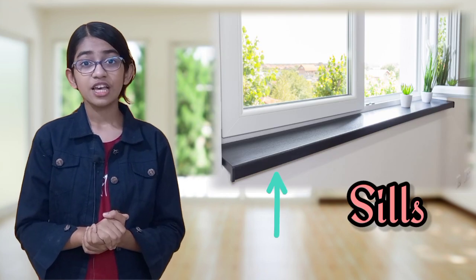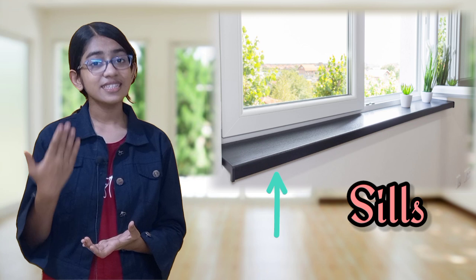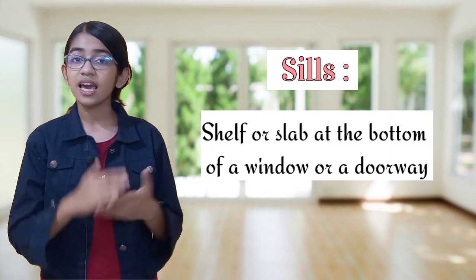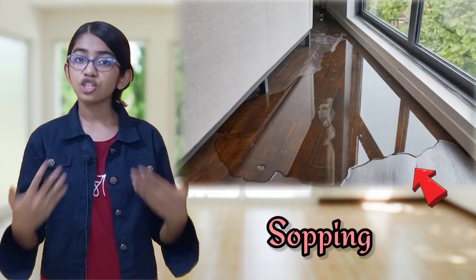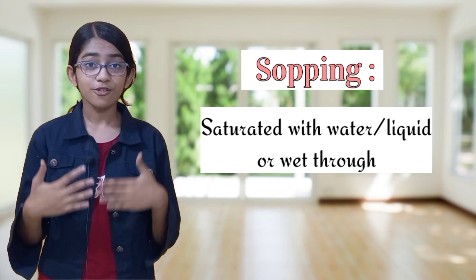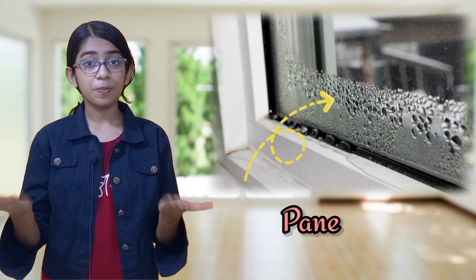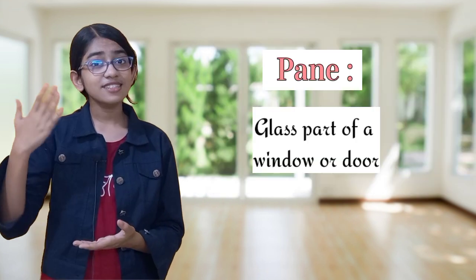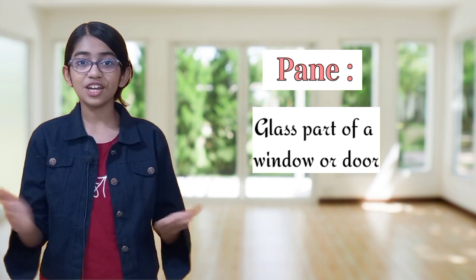In the very next moments, you saw the sopping sills. So, your second word is sills. It means the shelf beneath something inside or outside. Now, your third word is sopping. It means saturated with water or liquid, or wet through. After some time, you noticed moisture on the window pane. So, your fourth word is pane. It is the glass part of a window, door, etc.